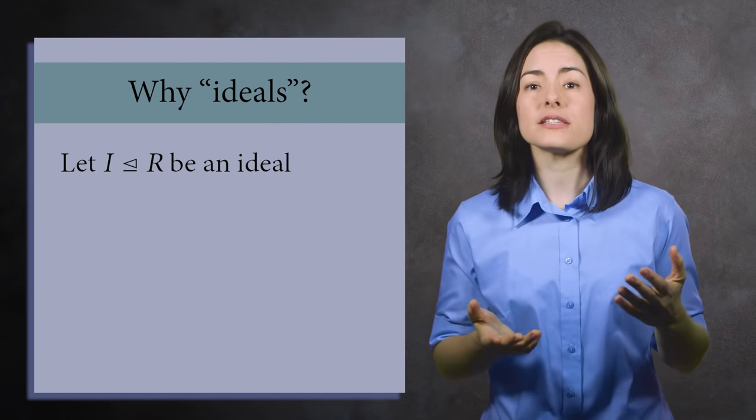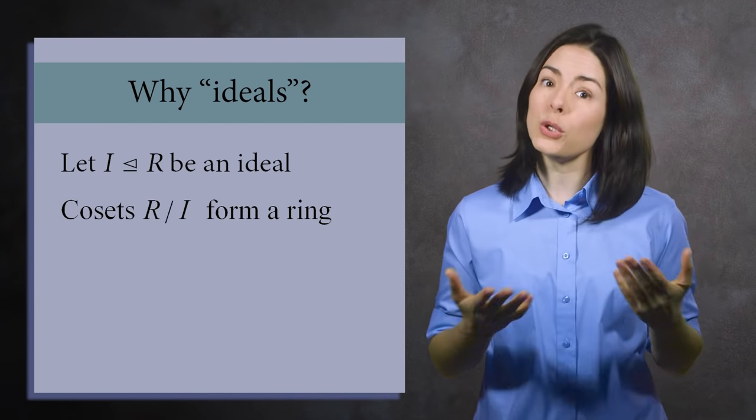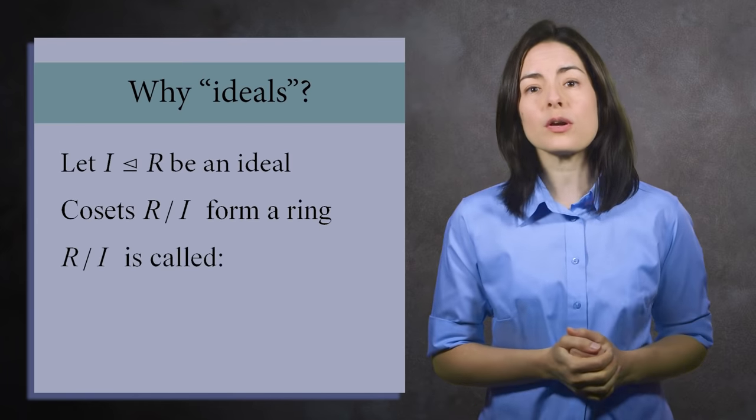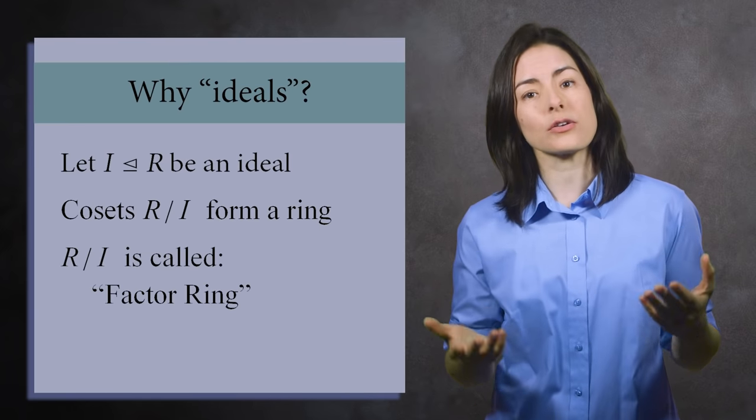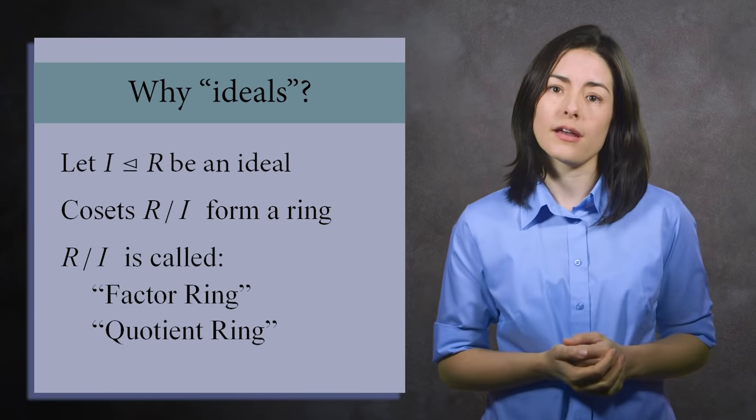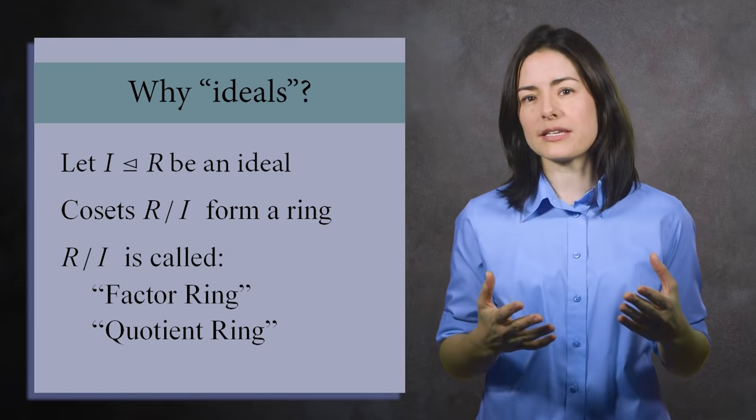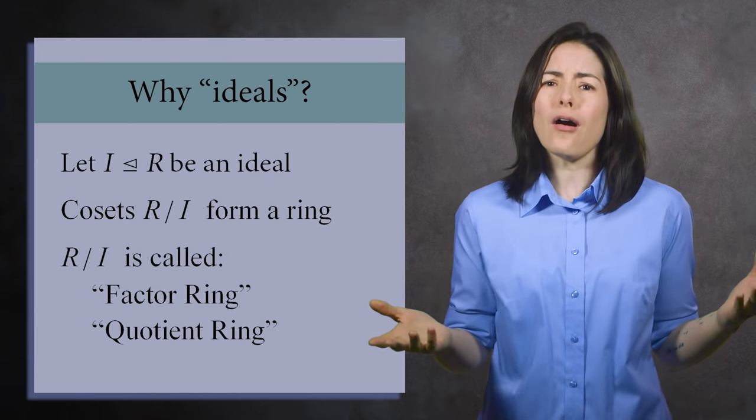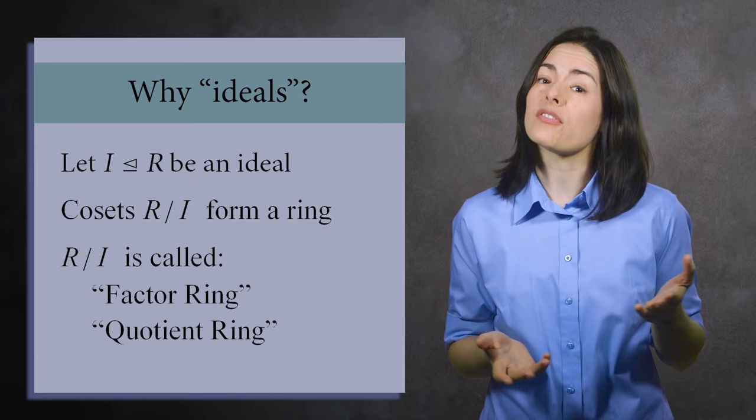An ideal of a ring lets you treat the cosets as elements in a new ring. As with groups, we call the collection of cosets a factor ring, or a quotient ring. With such strong similarities, you may ask yourself, why not call i a normal subring instead of an ideal?